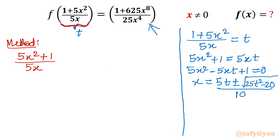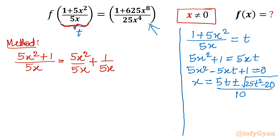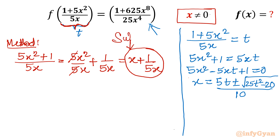Since the denominator x is non-zero, I can split the fraction. So (5x² + 1)/(5x) becomes 5x²/(5x) + 1/(5x), which simplifies to x + 1/(5x). This is our substitution. We will call this value a, so let a = x + 1/(5x).